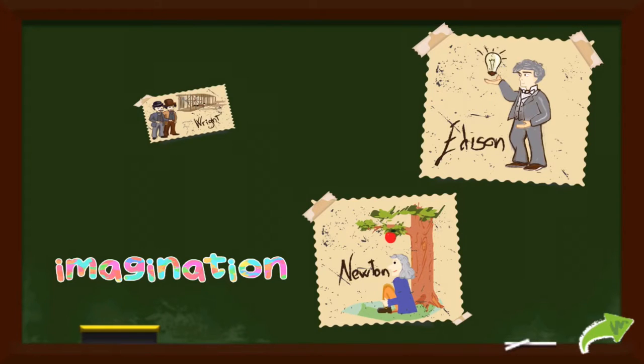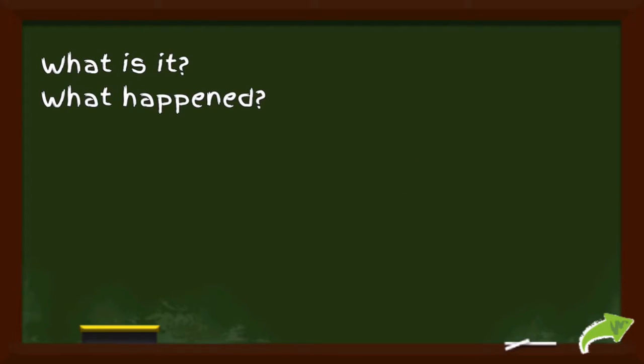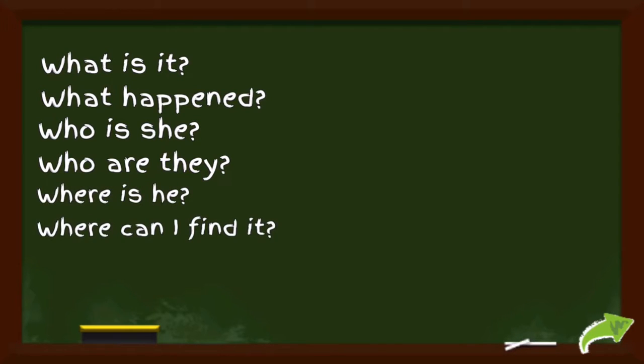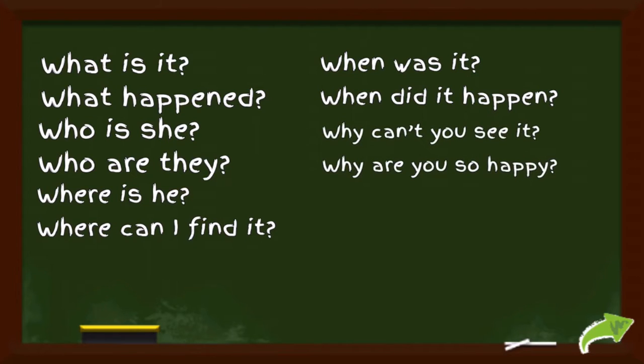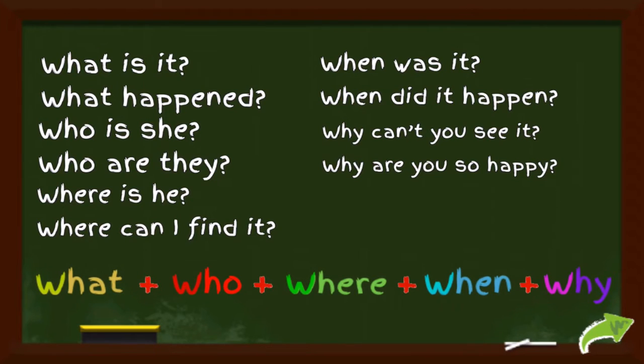We learn and know things by posing questions such as: what is it, what happened, who is she, who are they, where is he, where can I find it, when was it, when did it happen, why can't you see it, why are you so happy. What, who, where, when, and why - together they're W5.